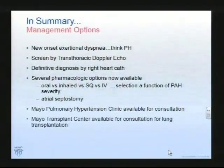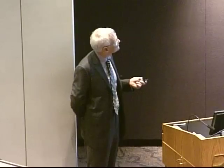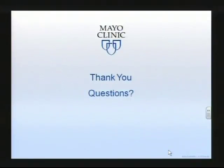Some summary thoughts: with new onset exertional dyspnea, if you've excluded everything else, done your asthma work-up, and have no other cause, particularly in a younger patient but really in patients of any age, think pulmonary hypertension. Screen with a transthoracic echo. If that shows pulmonary hypertension and you have no other treatable reason for it, please think about going fairly quickly to a right heart catheterization. Then of course initiation of treatment is important, and we're just down the road so don't forget about us. Any questions?